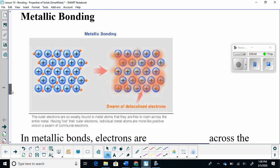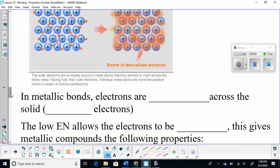So here we have a picture of metallic bonding. Metallic bonding happens within metals. In metallic bonding, electrons are shared across the solid.